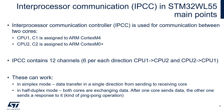The Interprocessor Communication Controller is used for communication between two cores. CPU1 (C1) is assigned to Cortex-M4 and CPU2 (C2) is assigned to Cortex-M0+. IPCC contains 12 channels — 6 per each direction: CPU1 to CPU2 and 6 from CPU2 to CPU1. These channels can work in simplex mode, where data transfer is in a single direction, or in half-duplex mode when both cores are exchanging data — a ping-pong operation.